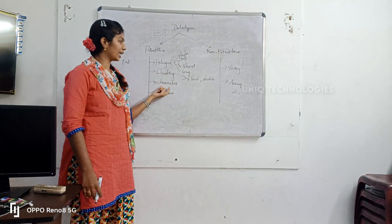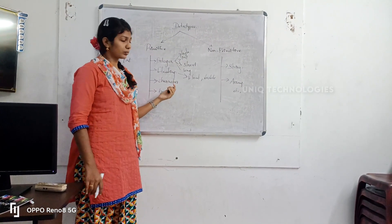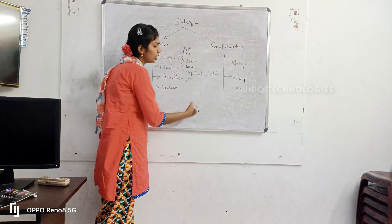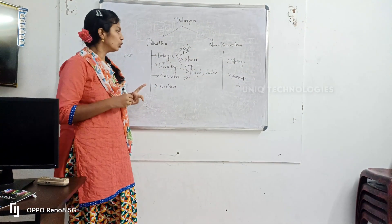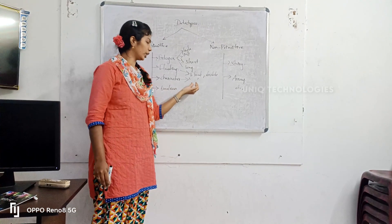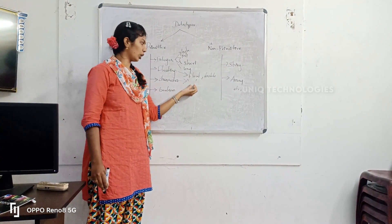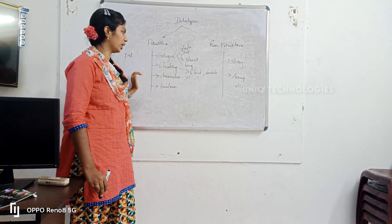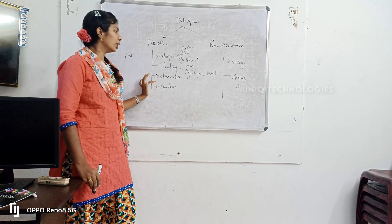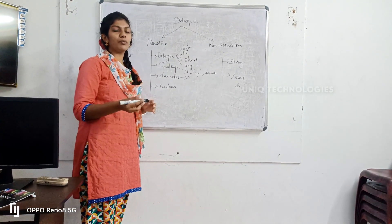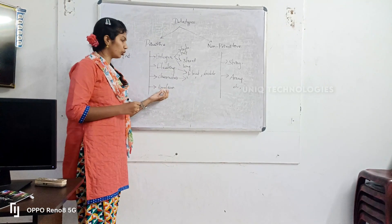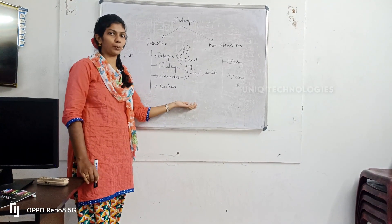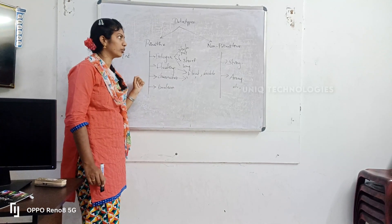Float is up to 5 to 6 decimal places — the floating area is where you can store decimal values. Character: if you use this, you can declare it using single quotes. Boolean is where you can store true or false. If you use a condition, you can check it.